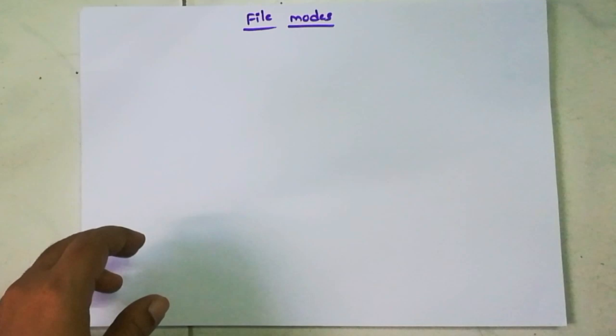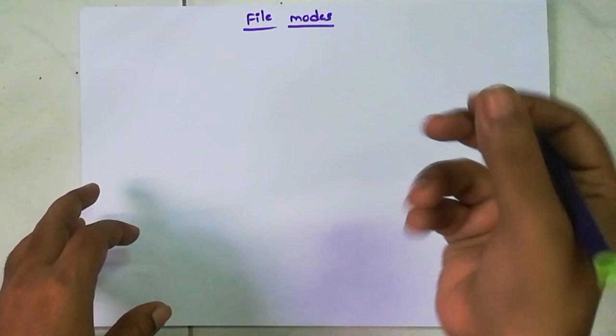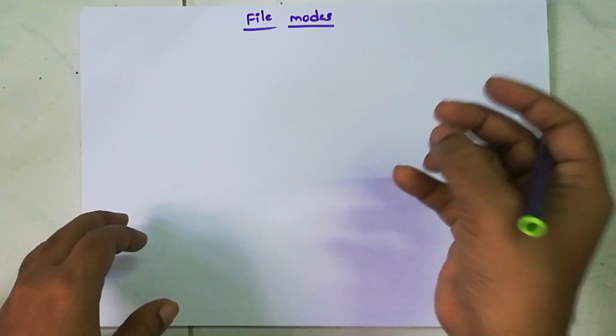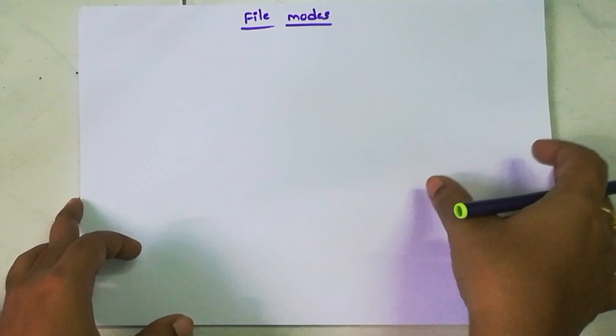Hi students, so last class we covered file basics introduction. Today we'll go into file modes in detail. In the previous class we covered what are the functions used in files: fopen, fputs, fgets. We learned how to open a file with fopen and close a file with fclose. So we covered that introduction.